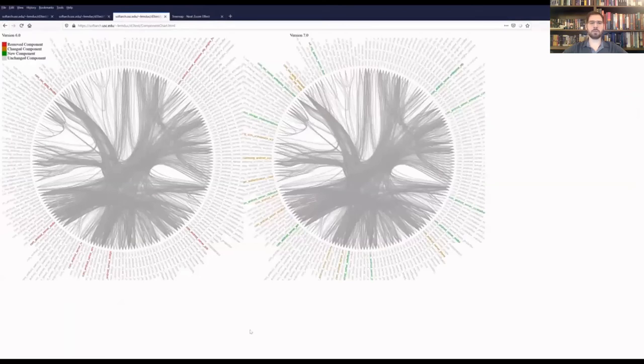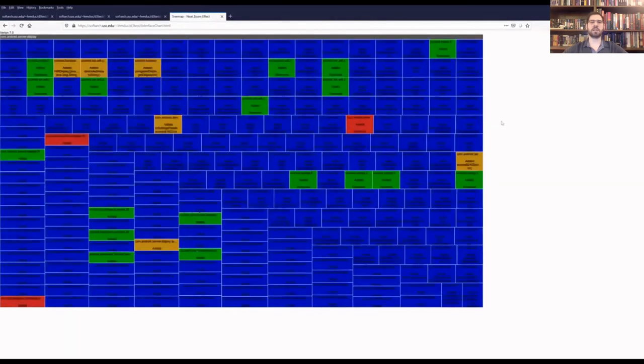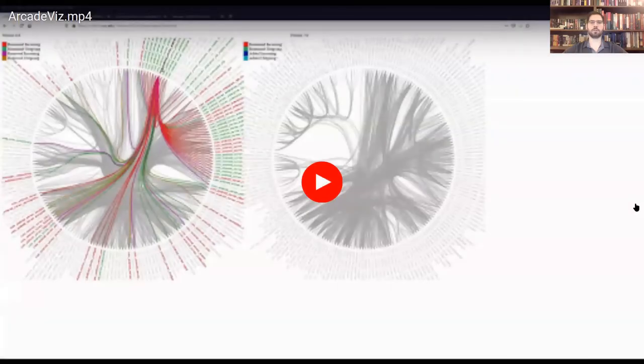For the Components view, one is able to see added, changed, removed, and unchanged components between versions. And in the Interfaces view, one is able to see an overview of implementation entities for a set of components, and by zooming in on one of those components, is able to see removed, added, and changed interfaces in those entities. For changed interfaces, one is also given the list of all of those changes.